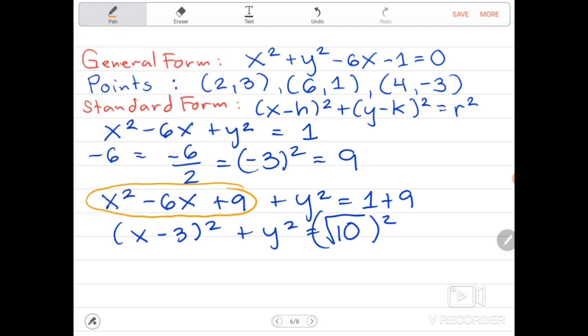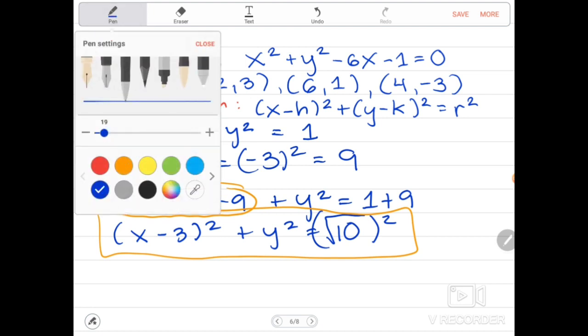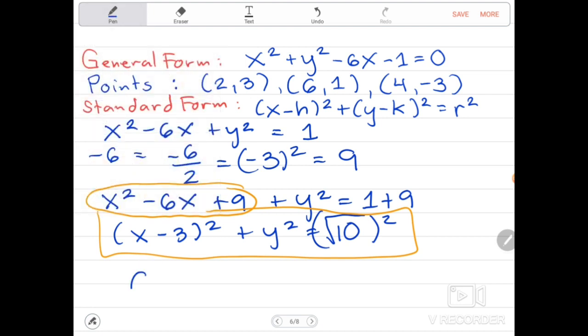So coming from the standard form, this is now our standard form, we can now determine the center and radius of the circle. What will be the center? The center will be 3 and 0 and the radius will be equal to square root of 10, or if we are going to get the value of square root of 10, it will give us 3.16.